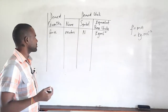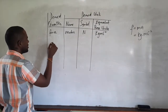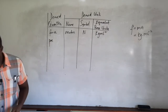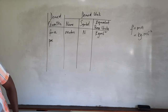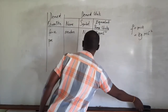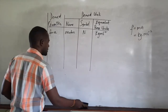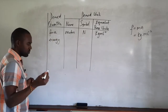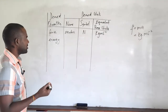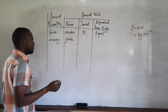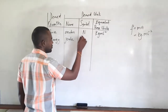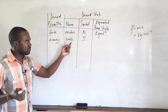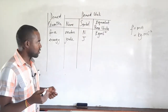The next quantity is energy. Energy has the same unit as work, which is the joule. The SI unit of energy is the joule, and the symbol for the joule is an uppercase J. We can also express the joule in terms of its base unit equivalents.